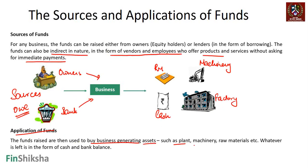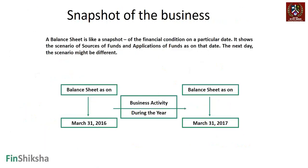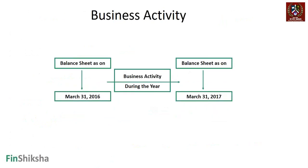You can use funds to buy business-generating assets such as plant, machinery, and raw material. Some generate business in the long run, like a factory used over its life, while others like raw material get used immediately. What remains is in the form of cash in hand or bank balance. So the sources and applications of funds will always have to match.